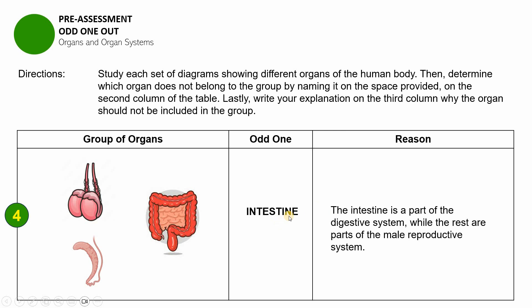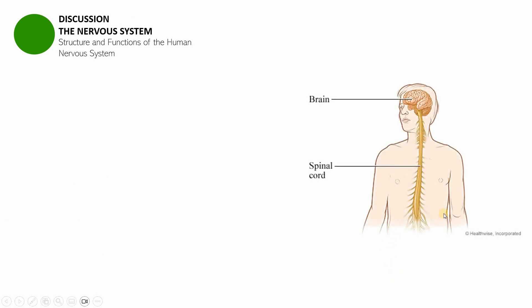The scoring is one point for the correct odd one and one point for the correct reason, giving a total of eight points. Indicate your score on the upper right-hand corner of your answer sheet. We are now through with this part of the session. Let us proceed to the last part: a discussion about the nervous system — the structure and functions of the human nervous system.